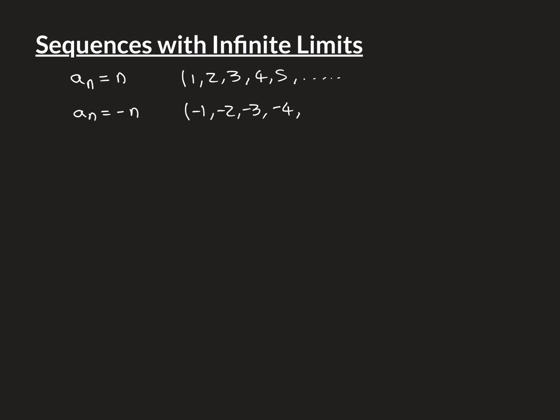What we're trying to contrast these nice sequences to is a sequence like negative 1 to the power of n times n. This is a really badly behaved sequence that isn't going to get the privilege of what we're about to define. That's a sequence that's going to flit between negative and positive terms. The first term is going to be minus 1, the second term 2, the third term negative 3, the fourth term 4, then negative 5, 6. You can see it's flitting between the negative and positive numbers, and in both directions it's going off. These even terms are going to get indefinitely big.